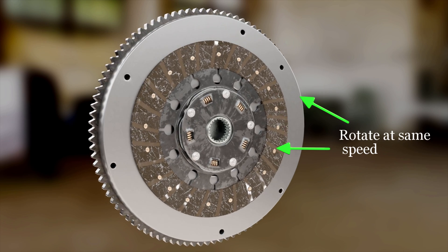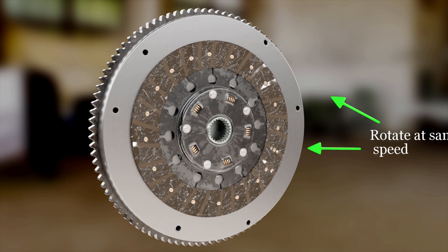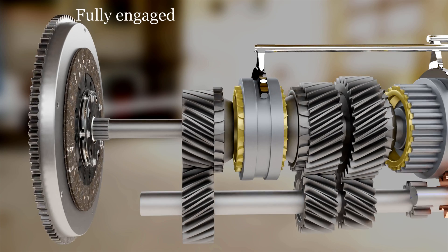Thus, when the flywheel and the clutch plate are moving at the same speed and there is no slip between them, the clutch is said to be fully engaged.